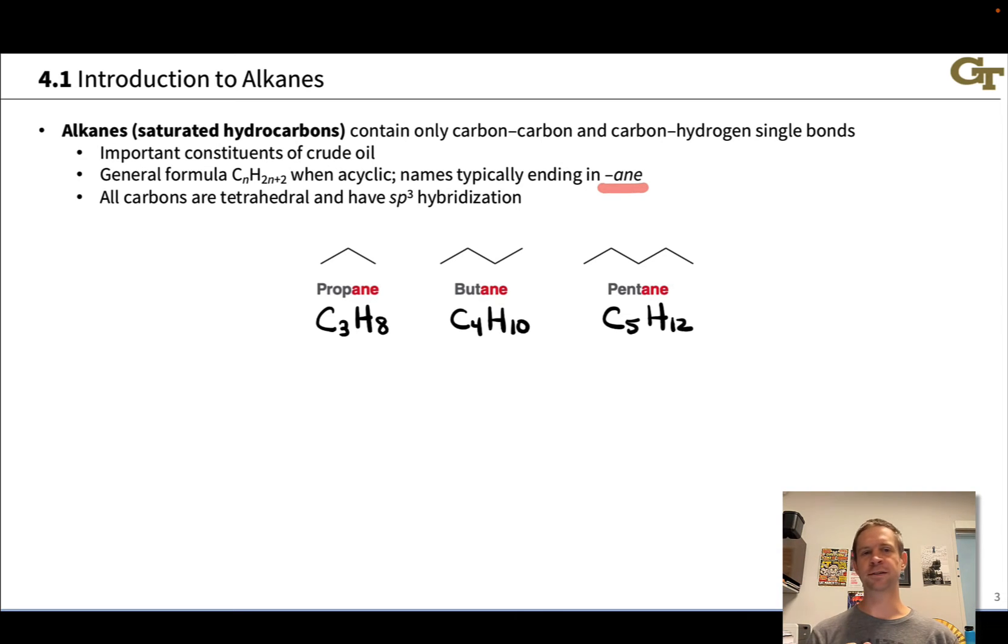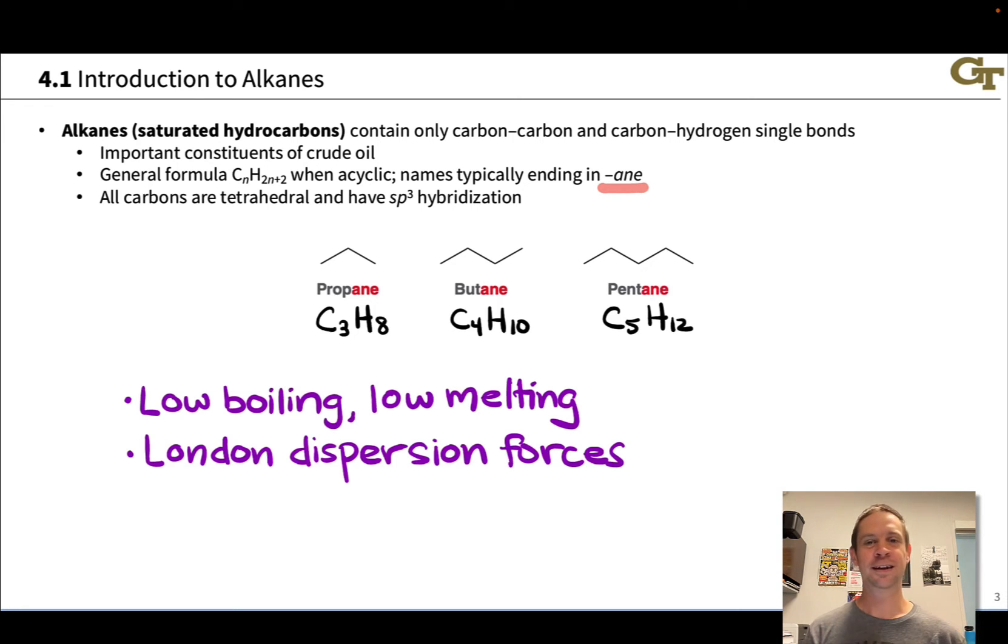Now, some important general properties of alkanes. First of all, because they don't have any heteroatoms, and they pretty much have no polarization to speak of, they're generally low-boiling and low-melting substances. So propane, for example, is a gas. Butane is barely a gas at room temperature. And pentane is a liquid that really, really wants to be a gas at room temperature. And the reasoning here, the idea here, is that the intermolecular forces in these compounds are purely London dispersion, no polarization to speak of. These are non-polar compounds, and so they have quite weak intermolecular forces and low boiling and melting points as a result.